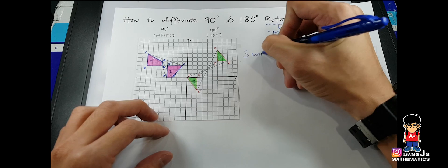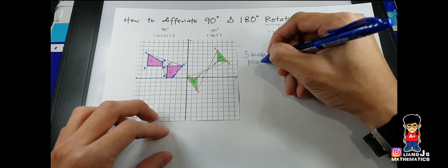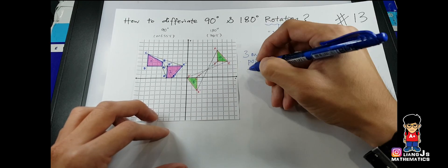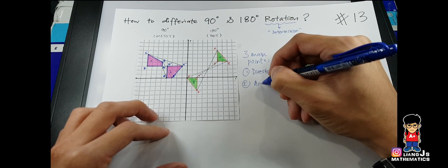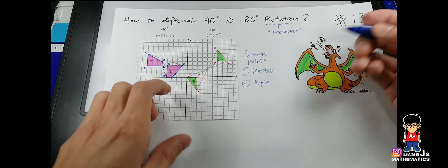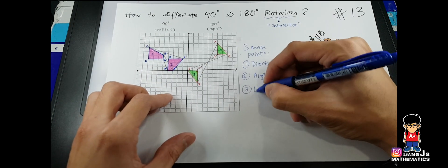The three main points for rotation will be: number one, you have your direction. The second thing, you have your angle, where we already know how to differentiate it. Number three, you need your rotation point.